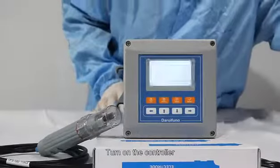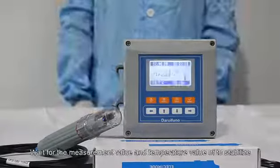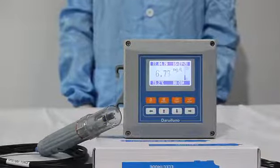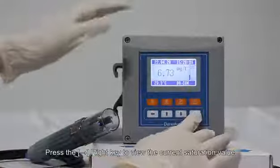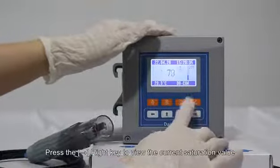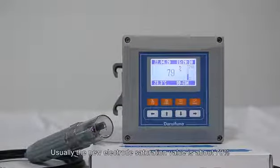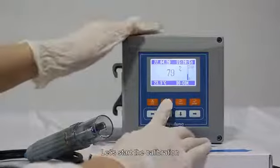Turn on the controller. Wait for the measurement value and temperature value to stabilize. Press the right key to view the current saturation value. Usually the new electrode saturation value is about 70%. Let's start the calibration.